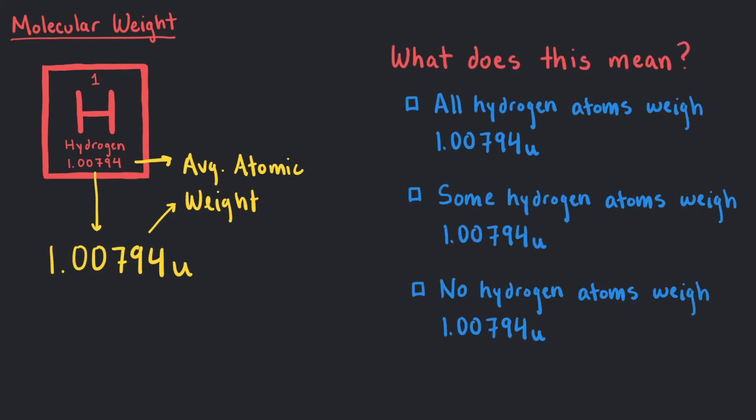What does this mean? This average atomic weight doesn't mean that one hydrogen atom will weigh 1.00794U, but the average of all the naturally occurring isotopes of hydrogen atoms weighs 1.00794U.